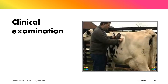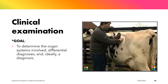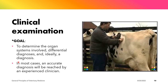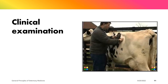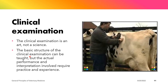Why do we do clinical examination? The first goal is to determine the organ systems involved, obtain a differential diagnosis, and ideally a diagnosis. In most cases, an accurate diagnosis will be reached by an experienced clinician. It is important to note that clinical examination is an art, not a science. The basic structure can be taught, but the actual performance and interpretation involved require practice and experience.